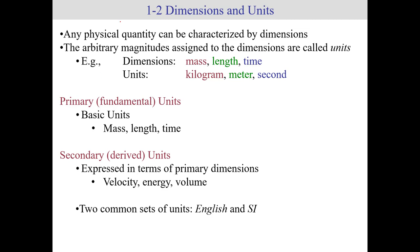Let's look at dimensions and units. Any physical quantity can be characterized by dimensions. The arbitrary magnitudes assigned to dimensions are called units. So dimensions would be, an example would be mass, length, and time. And the unit for mass is kilogram, the unit for length is meter, and the unit for time is second. So there's two basic types of units. We have primary and secondary. Primary units are what we call fundamental units. You cannot break down the unit any more than this fundamental. And some examples of that is mass and kilograms. I can't break kilograms down into a more basic unit. Length, I can't break down, for example, meter into a more basic unit. Time has a fundamental unit of seconds. I can't break down seconds into a more fundamental unit.